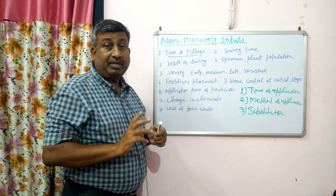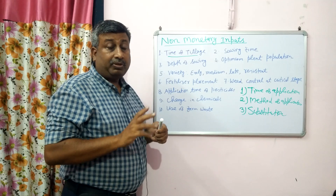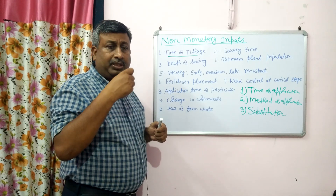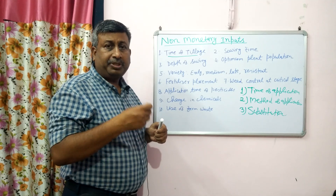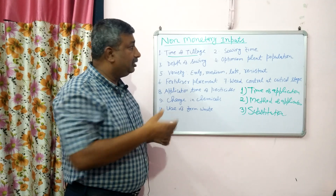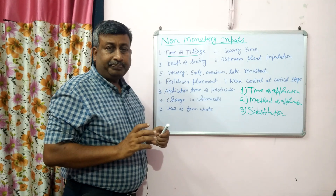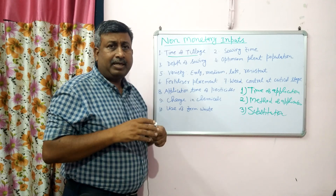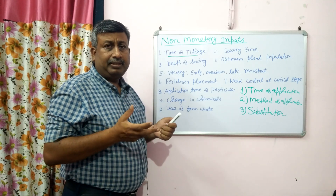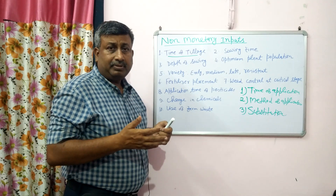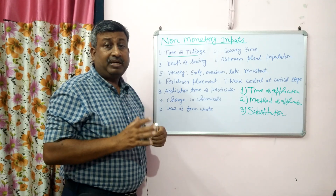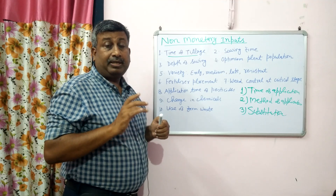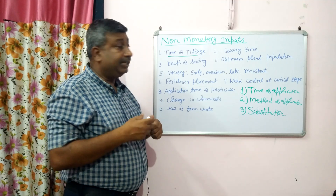So time of application of tillage is very important, because in tillage our objective is not just to prepare the seedbed — our objective is to reduce the weed population, insect population, and disease population. Time of tillage is very important, particularly in summer ploughing, where we can reduce weeds, insects, and disease.